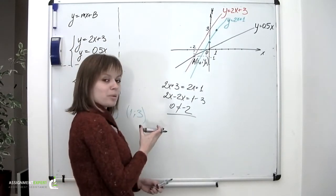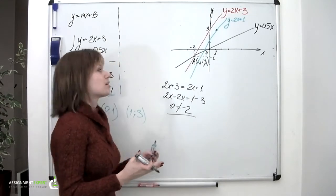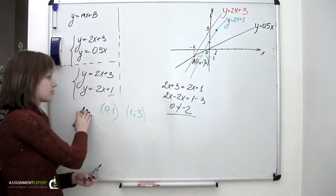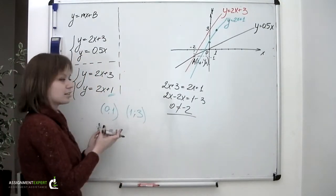That the assumption we've made was incorrect. So these two lines don't intersect. And this system don't have any solution.